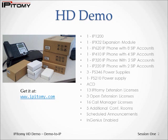Also in the box are one each of the following: an IP 220, which is a 2-SIP line telephone; an IP 320, which is a 2-SIP line telephone; an IP 410, which is a 4-SIP line telephone; an IP 620, which is an 8-SIP line telephone; and an IP X32, which is a 32-button expansion module that can be applied to the IP 330, the IP 410, and the IP 620.